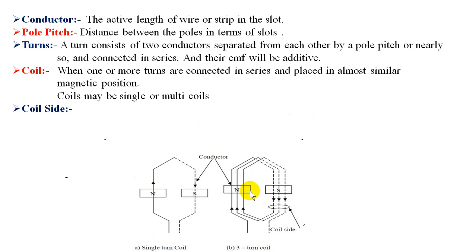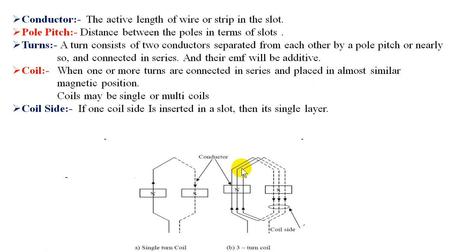What is a coil side? If one coil side is inserted in a slot, it is called single layer — you can see here it is just one coil. If two coil sides are inserted in a slot, it is known as double layer, and so on — triple layer, quadruple layer, and multi-layer, denoted by the symbol M.